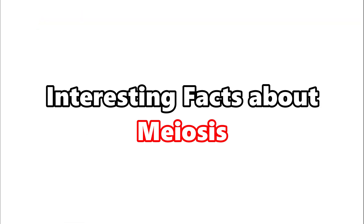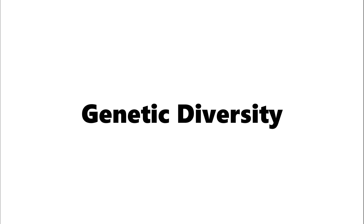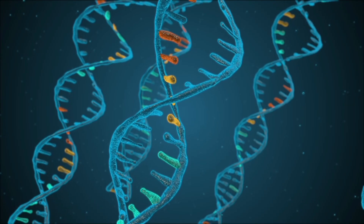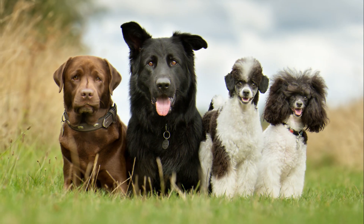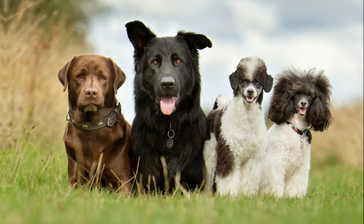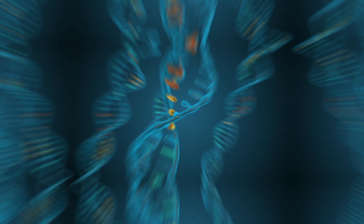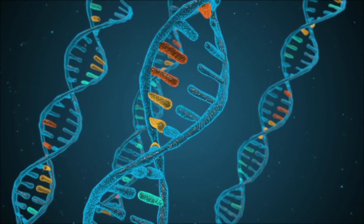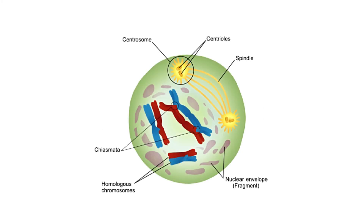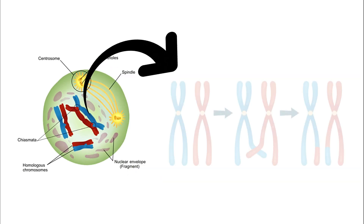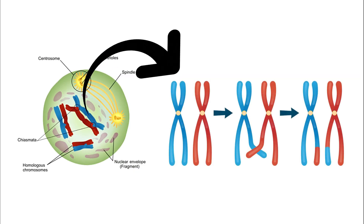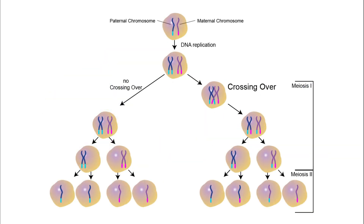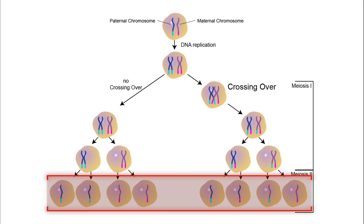Here are some interesting facts about meiosis. Genetic diversity: meiosis is nature's way of shuffling the genetic deck. It's responsible for the uniqueness of individuals by creating an astounding number of possible combinations from the parent's genetic material. Crossing over: during prophase 1, the process of crossing over occurs, where genetic information is swapped between homologous chromosomes, introducing even more genetic diversity.